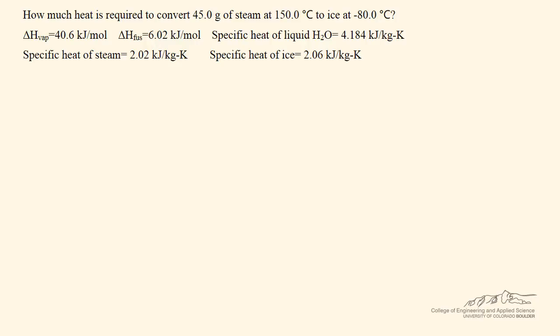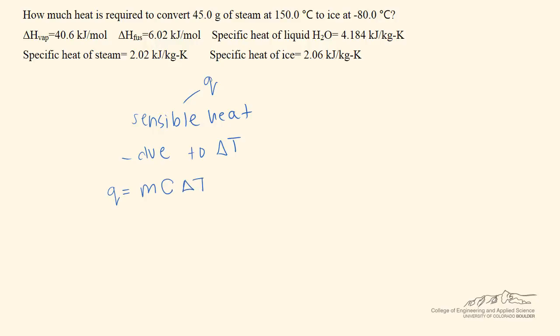First I'll talk about the different types of heat. Heat is designated by Q. On one hand we have sensible heat, which is due to a temperature change. The formula we can use to calculate sensible heat is Q equals M, the mass, times C, the specific heat, times delta T.